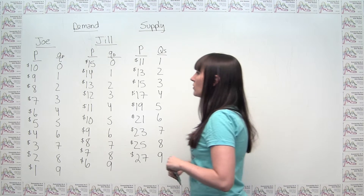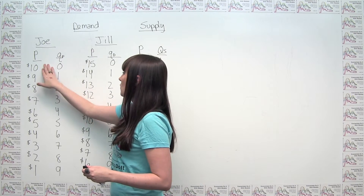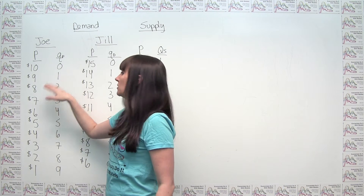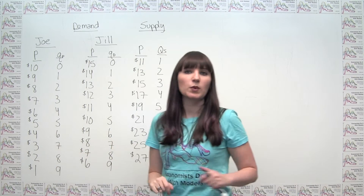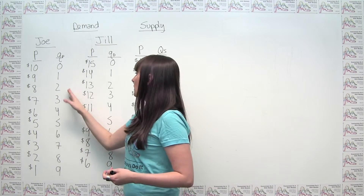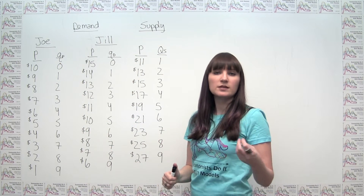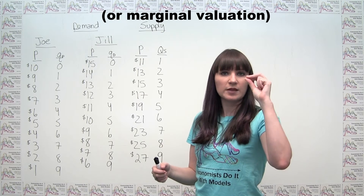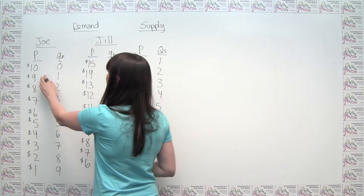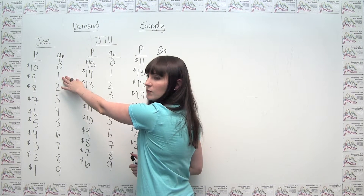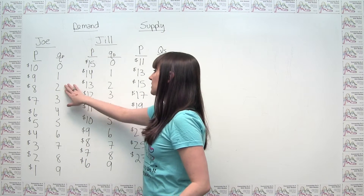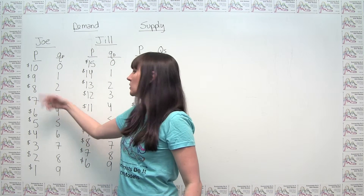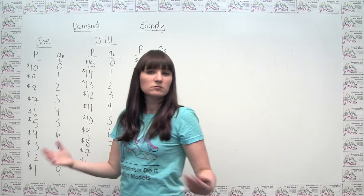Notice here: at a price of $10, Joe is not willing to pay $10 for any acreage. But once the price drops to $9, he wants one acre of park. If the price drops to $8, he wants two acres, and so on. This demand schedule gives us marginal willingness to pay for that last unit. Joe's willingness to pay for the first acre is $9, for the second acre is $8, and for the third acre is $7.